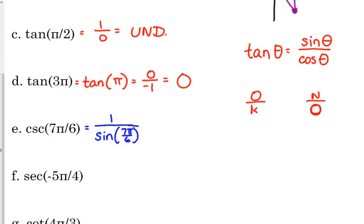Cosecant is the reciprocal of sine, so it's going to be 1 over the sine or I can look at the sine ratio and flip it over. Sometimes it's easier one way as compared to the other. So, 7π over 6. Where's that at?